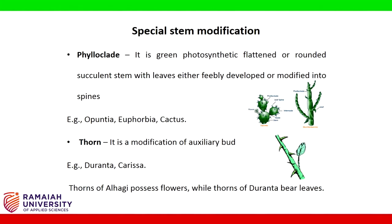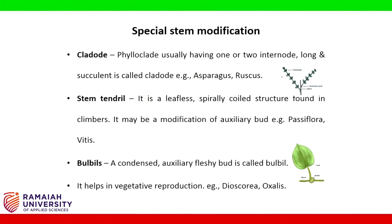Thorn: it is a modification of the axillary bud. Examples: Duranta, Carissa. The thorns of Alhagi possess flowers, while the thorns of Duranta bear leaves. Cladode: a phylloclade usually having one or two internodes long and succulent is called a cladode.